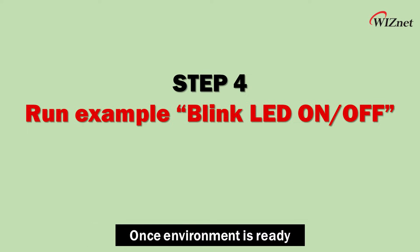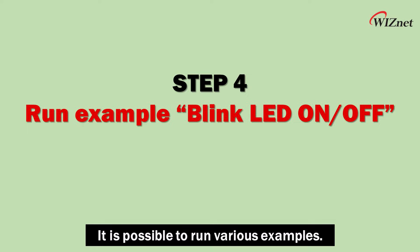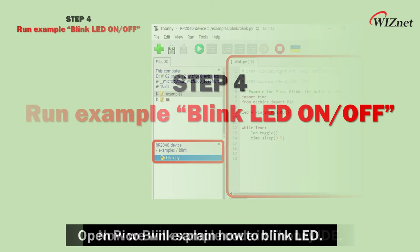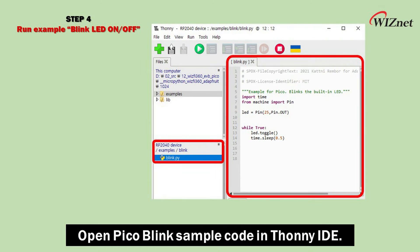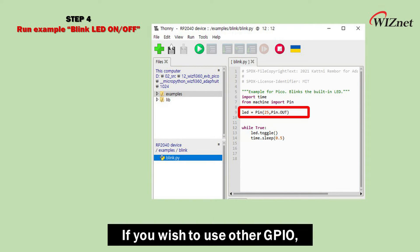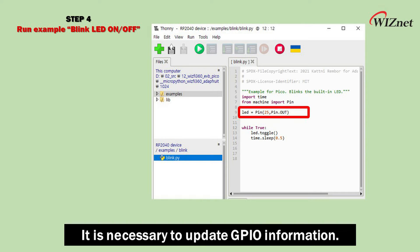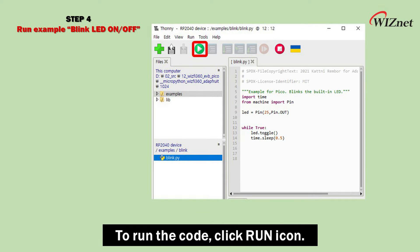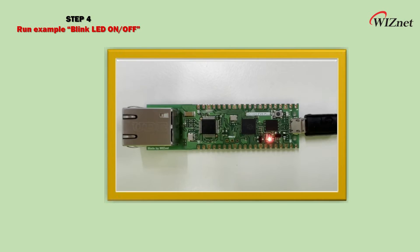Once the environment is ready, it is possible to run various examples. Now we will explain how to blink an LED. Open the PicoBlink sample code in Thonny IDE. This sample is made to blink the built-in LED. If you wish to use another GPIO, it is necessary to update the GPIO information. To run the code, click the Run icon.